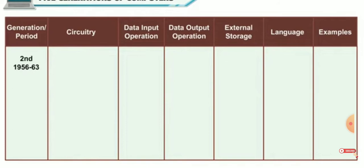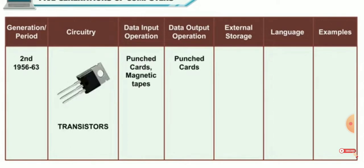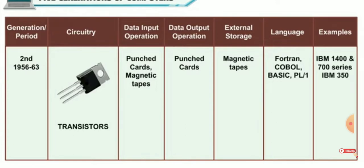Second generation computers, developed between 1956 and 1963, had more advanced circuitry. They used transistors instead of vacuum tubes. Punched cards were still used for data input and output. Magnetic tapes were used for input and storage. Now computer languages like COBOL, FORTRAN, BASIC, and PL/1 were introduced. IBM 1400 and 700 series, and IBM 350 were some second generation computers.